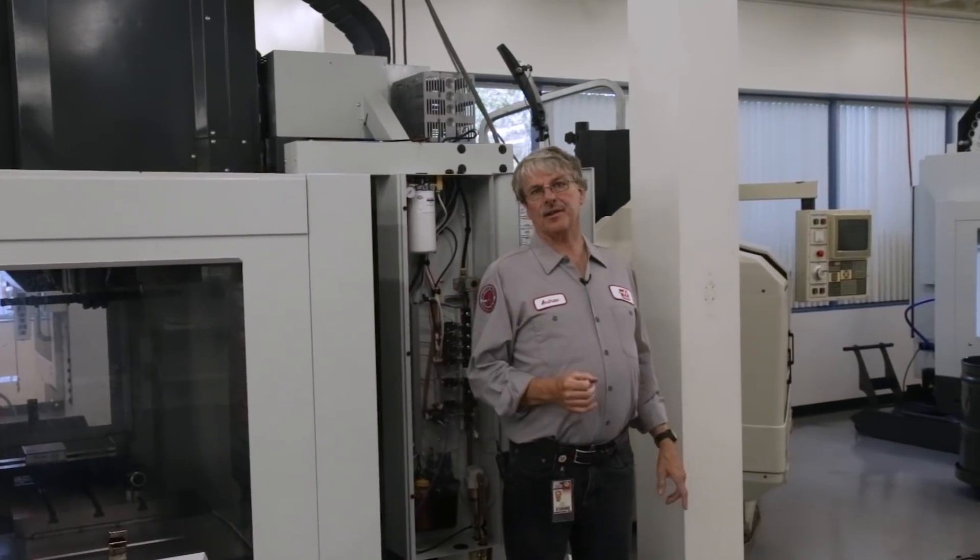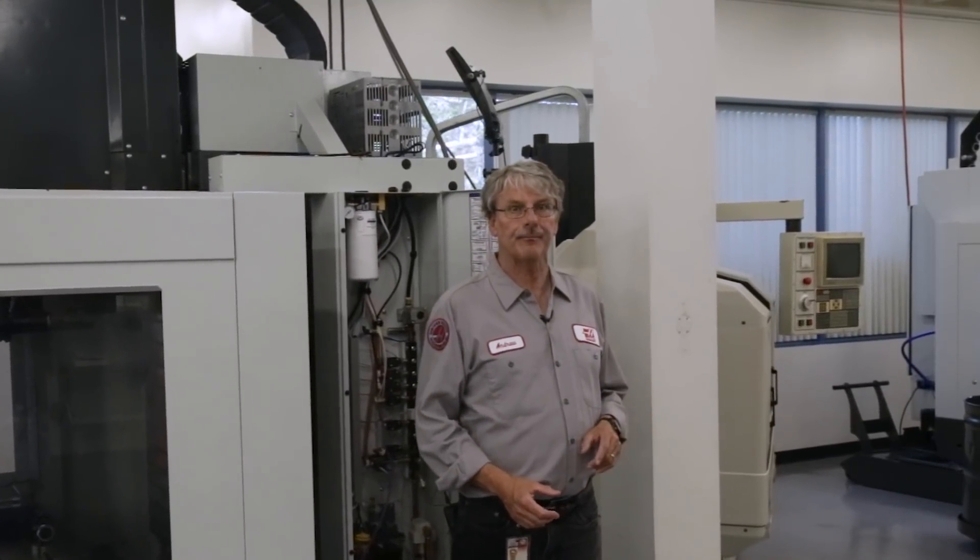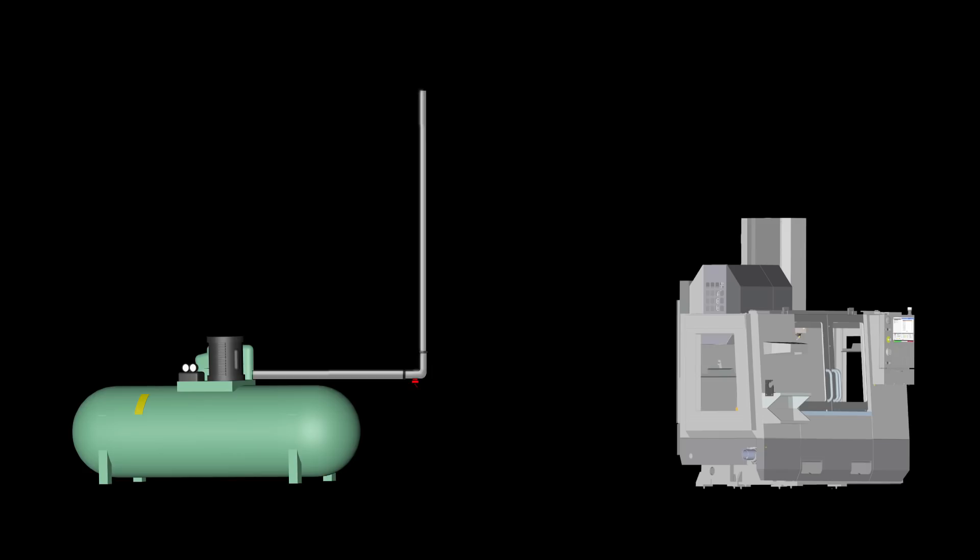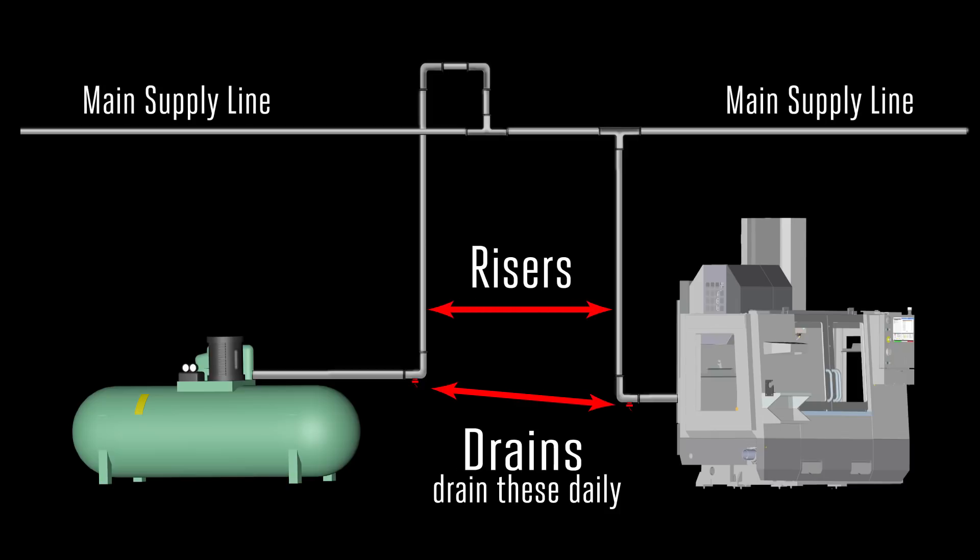Of course, an air dryer is the best way to combat the problem of water in your air, but those aren't cheap. Luckily, there's another way to deal with this issue. When you plumb air to your machines, always use vertical risers with drains at the bottom and attach machine drops from the top of your main air supply line. Any moisture in the system will tend to fall away from the path of the compressed air.